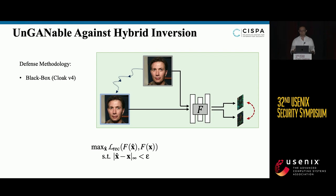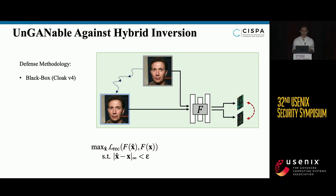In the third scenario, the defender has no knowledge of the target generator, target encoder, or inversion techniques, and can only search for the cloaked image in the image space by modifying the original to maximize the feature deviation between the target image's feature and the cloaked image's feature.